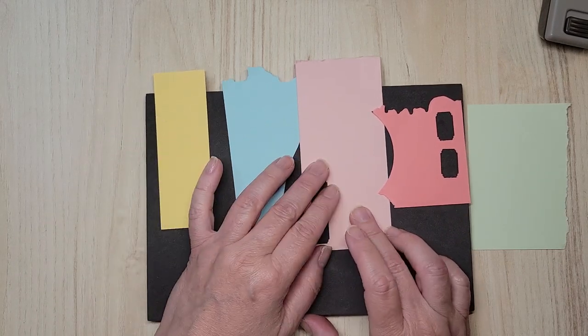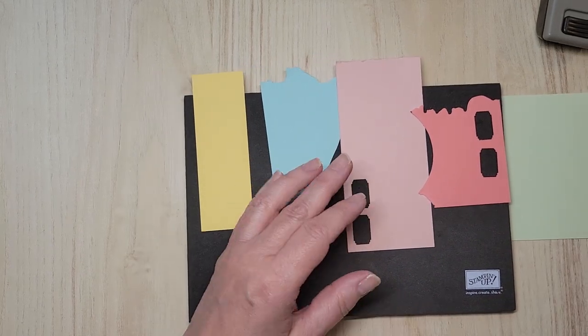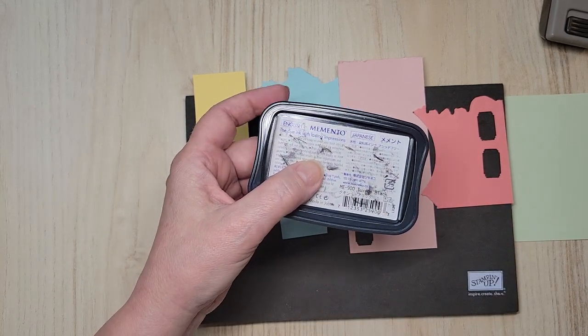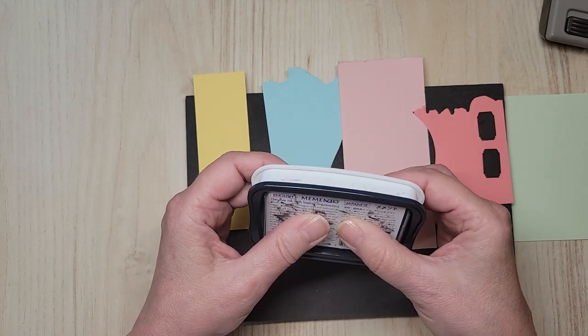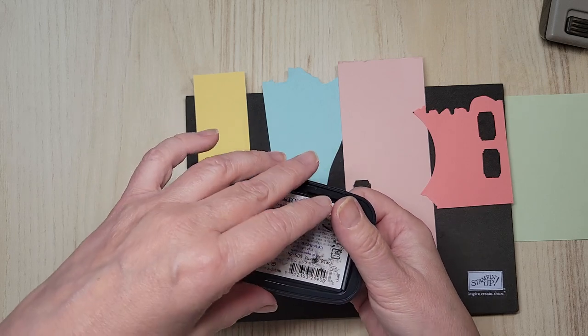Pool Party, Blushing Bride, Flirty Flamingo and Soft Seafoam. I'm going to be using Memento black ink. Now, if you're wondering why is this upside down, that's because that's the way I store it. With this kind of stamp pad you want to store them upside down so the ink stays at the top.